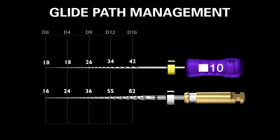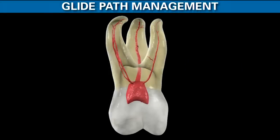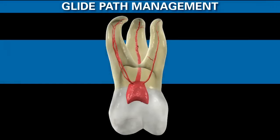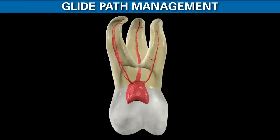Back to our distal buccal root — we've covered what the glide path is and what the tools are. The next question is: do we take files to length immediately, or work two-thirds of the canal first to get pre-enlargement done and improve access to the apical one-third? In general, in shorter, wider, and straighter canals we have permission to take our small hand file to length immediately. But in longer, more narrow, and more curved canals, it's wise not to try to negotiate the full length all at once.